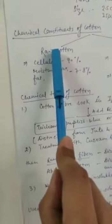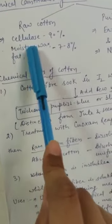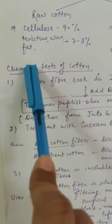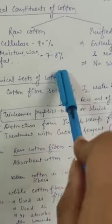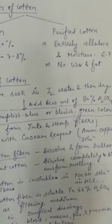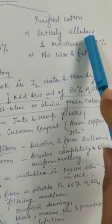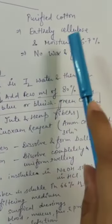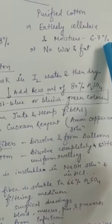Chemical constituents of cotton. In case of raw cotton: cellulose 90%, moisture and wax/fat around 7-8%. In case of purified cotton: mostly cellulose, moisture around 6-7%